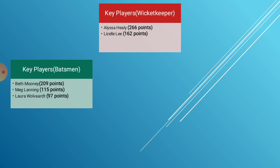Moving on to key batsmen — Beth Mooney has been in good form, scoring consecutive fifties including 81 off 58 against Bangladesh and 60 off 50 against New Zealand, making her a definite key player. Meg Lanning has played the anchor role when Australia's top order has failed, steadying the ship in a couple of matches, and her experience will come in handy in a semi-final. Laura Wolvaardt was required to bat only once in the last three matches but played a superb knock of 53 off 36 balls against Pakistan, and she can be that key player for South Africa in the latter half.